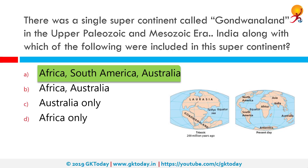Gondwana included Antarctica, South America, Africa, Madagascar, Australia, New Guinea, and New Zealand, as well as Arabia and the Indian subcontinent, which have now moved entirely into the northern hemisphere.